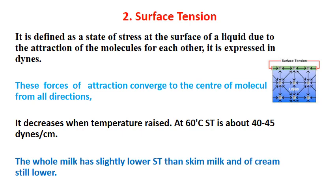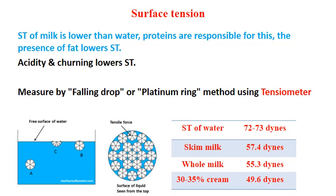Surface tension is a common property for all liquids due to the stress at the surface caused by attraction of molecules, where the force converges at the center of the molecule. Surface tension of milk is lower than water, and proteins are responsible for this. The presence of fat further reduces the surface tension. Acidity and churning also reduce surface tension. Surface tension is measured by the falling drop or platinum ring method using an instrument called a tensiometer.